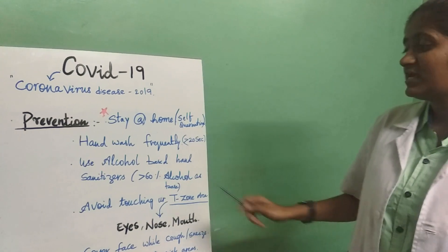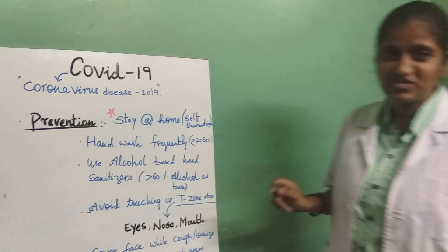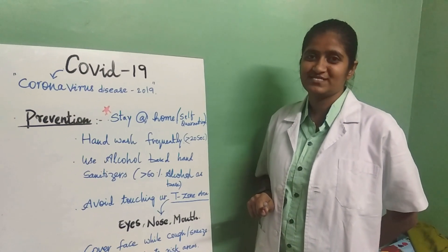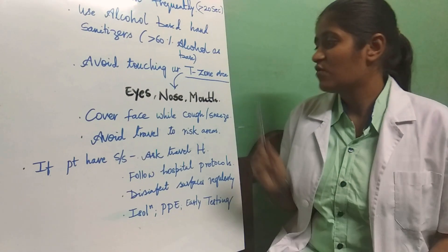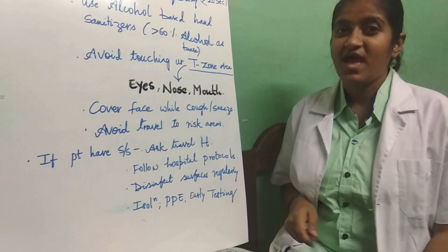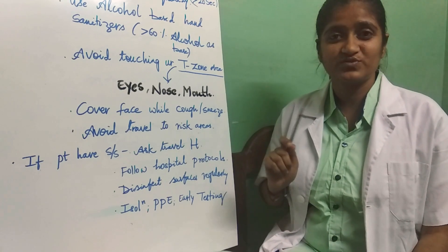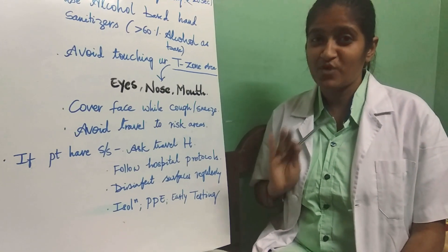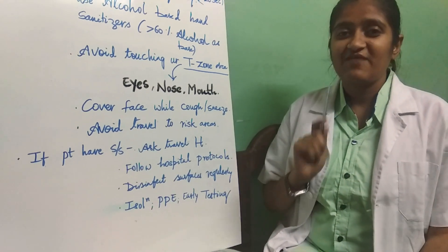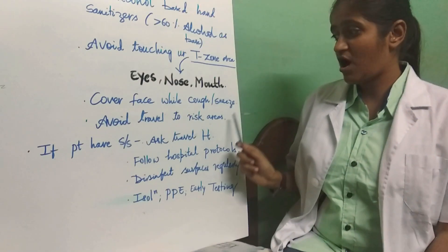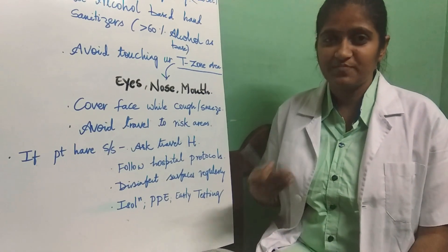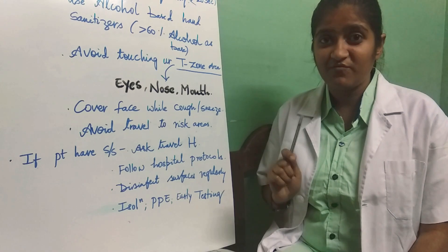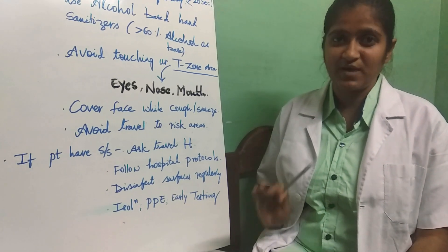Avoid touching the T-zone area, which includes your eyes, nose, and mouth. Cover your face while coughing or sneezing, and if possible use disposable tissues, which should be disposed of properly after use. We also have to avoid travelling to risky areas, and in the present situation with lockdowns, avoid travelling as much as possible.